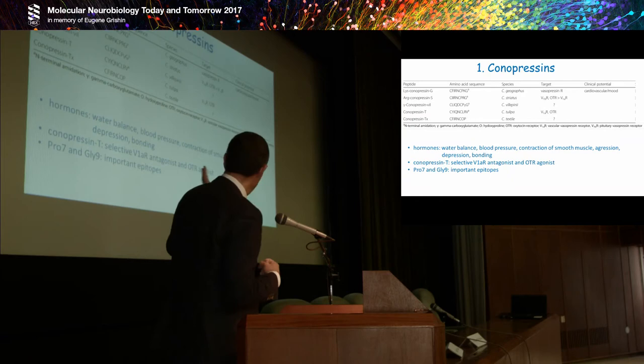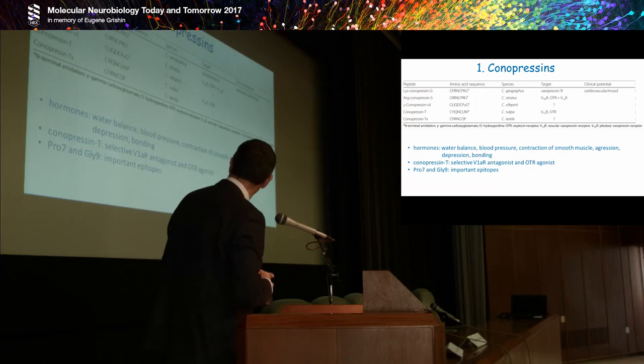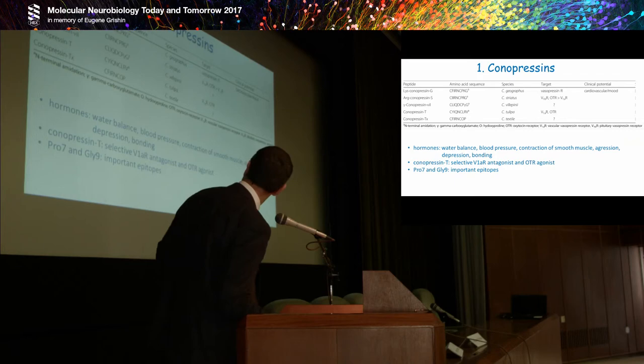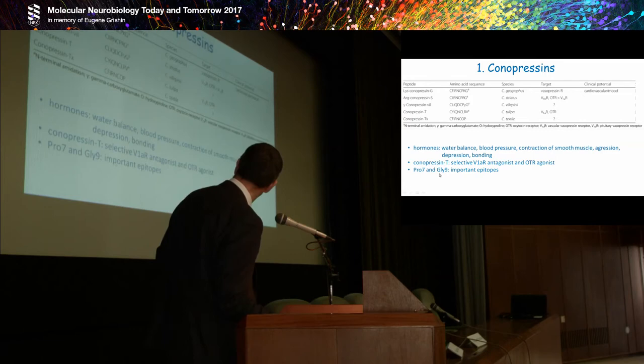According to authors specialized in these, it is important for fish-hunting Conus snails. What do they do in terms of physiology? They act almost like a hormone. They are important in water balance, blood pressure, contraction of smooth muscle, aggression, depression, and bonding of creatures. Do we understand how? No, we don't. Because if you take the example of conopressin T, it is known from structure-function studies that it's a selective vasopressin 1A antagonist, but on the oxytocin receptor it's an agonist. So we have opposing effects. What we do know is that proline 7 and lysine 9 are important epitopes for the pharmacology.